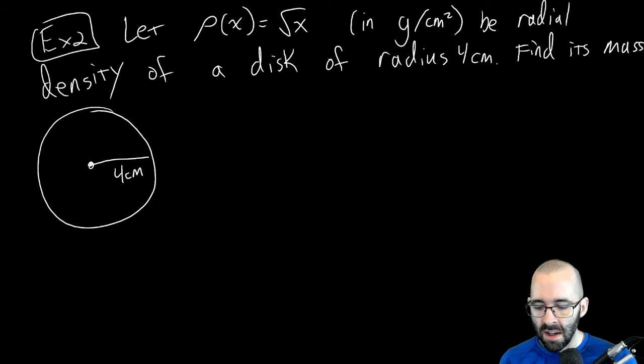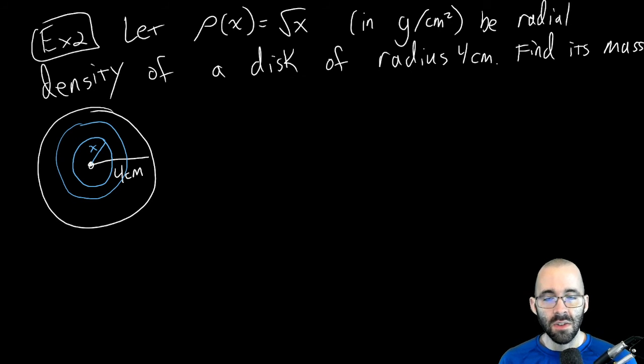Maybe it's kind of like a frisbee. As we get further away, as x increases - and x is the distance from the center - as x gets bigger and bigger, the density is increasing according to the square root function.